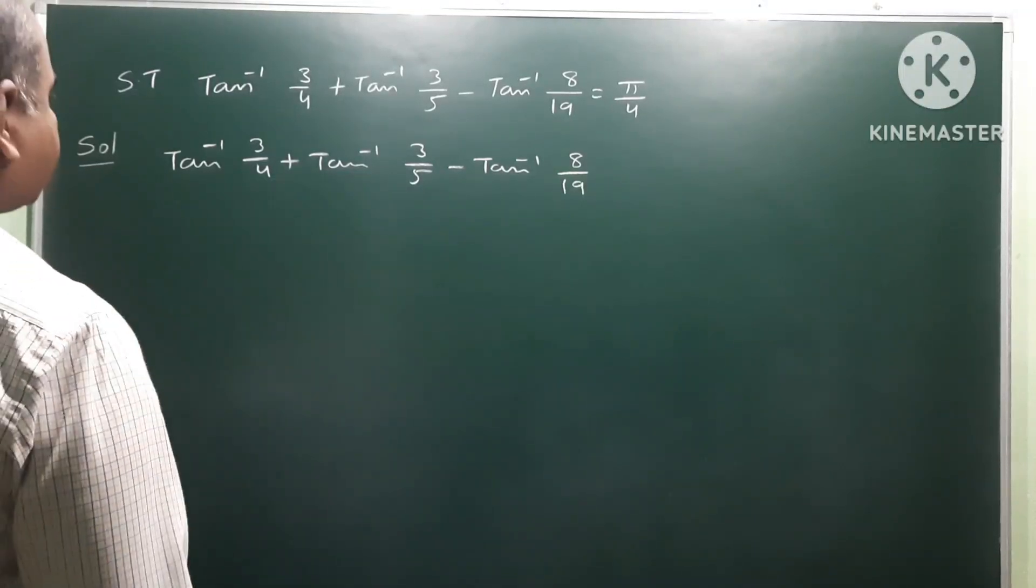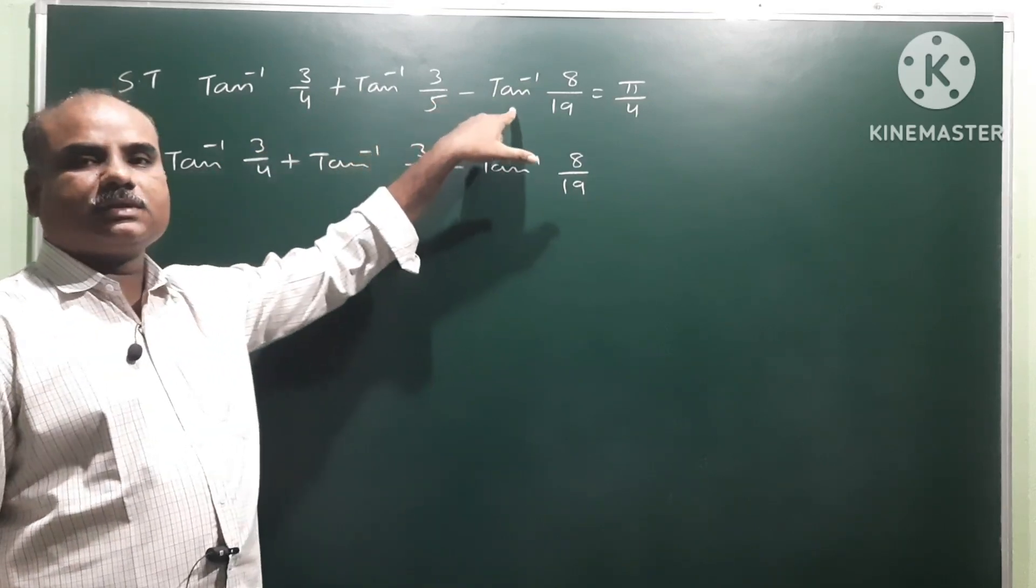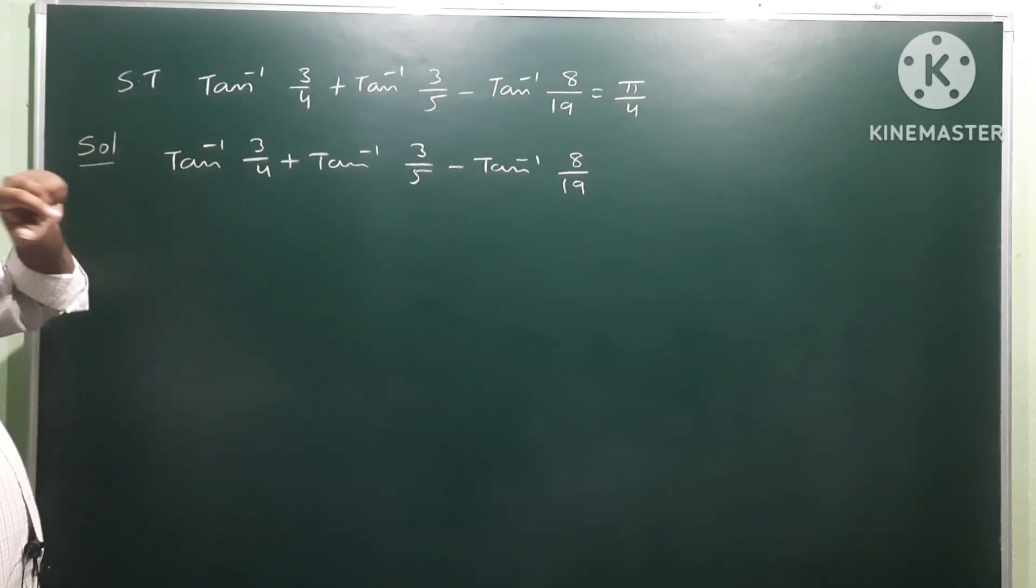Okay, next one: tan inverse 3 by 4 plus tan inverse 3 by 5 minus tan inverse 8 by 19. So this I have to show that pi by 4.